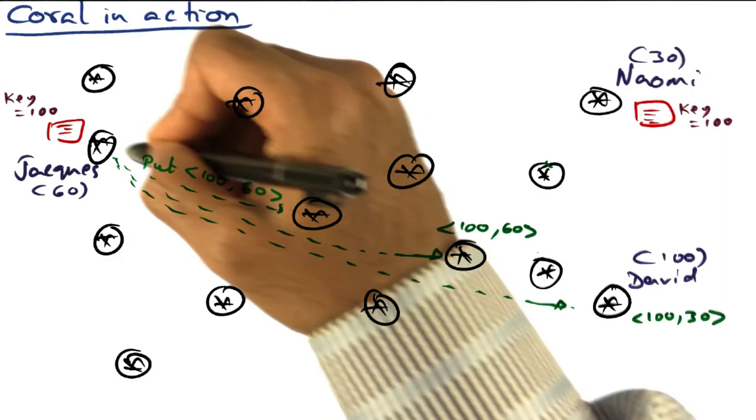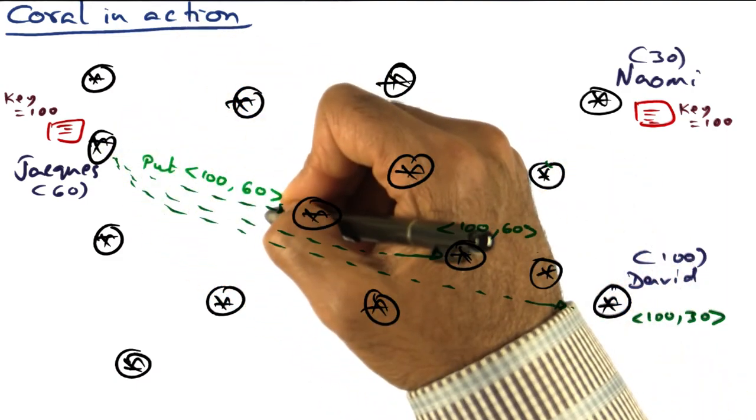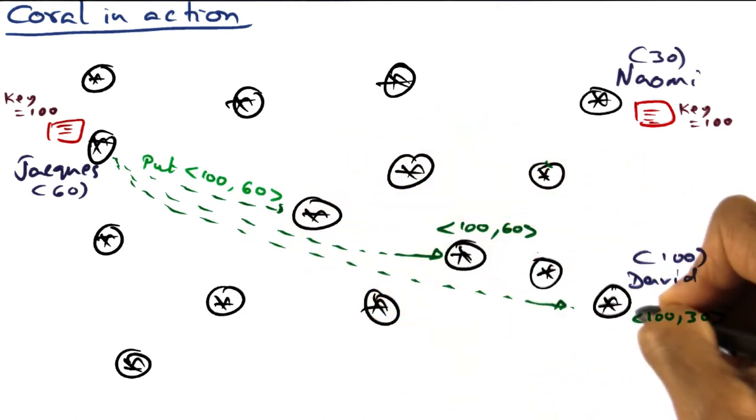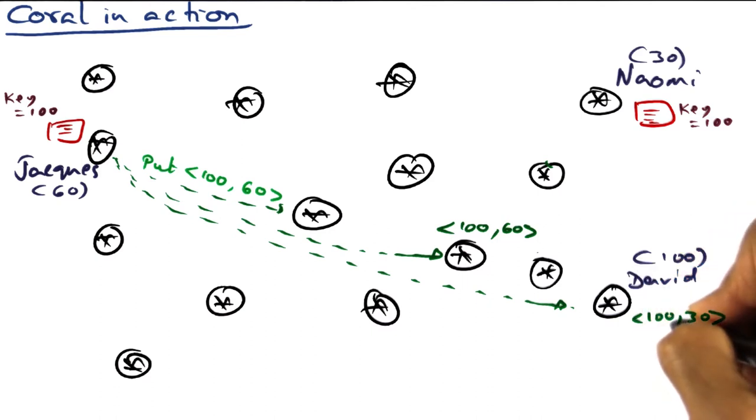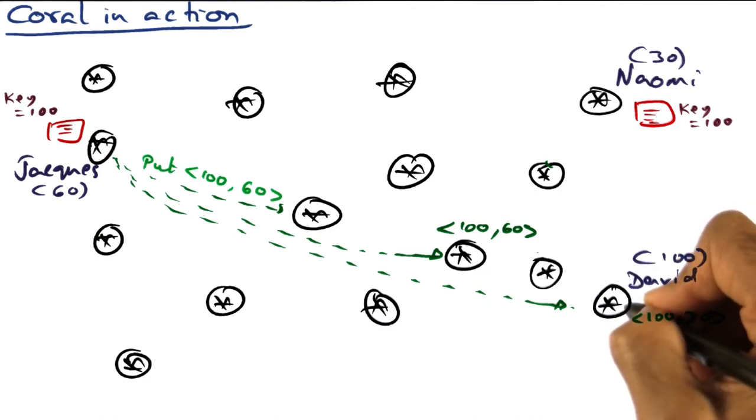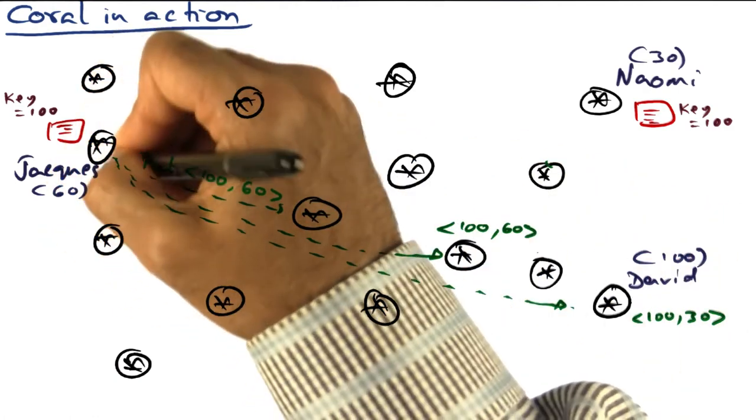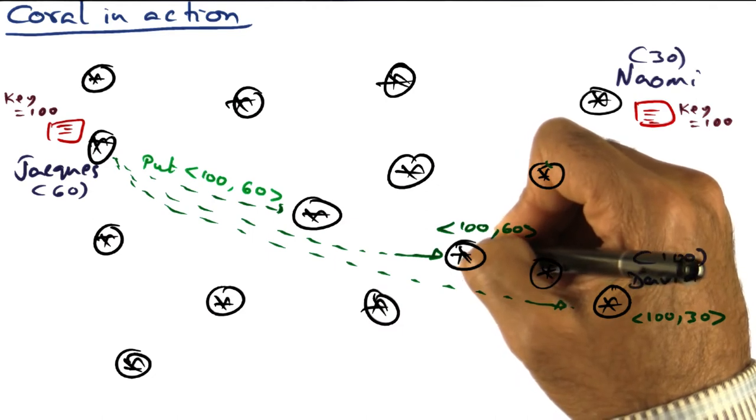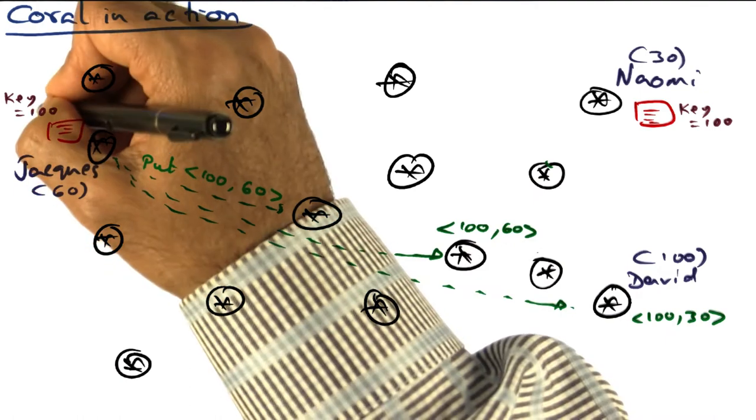And this put operation is going to use the same key base routing algorithm. And when it gets to David, David might say, look, I'm not interested in holding more than one value for this particular key. And so if he says that I don't want to do it, then I have to retract my steps and pick an intermediate node which said that it is willing because it is neither loaded nor full for this particular key 100.